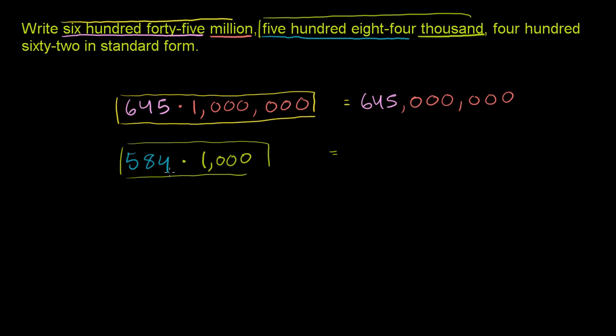Well it's going to be 584 with three zeros behind it. Or you could view it as 584 times the 1 and then you're going to have three zeros in the final answer. So it's going to be 584,000. You have our three zeros at the end. 584, three zeros.